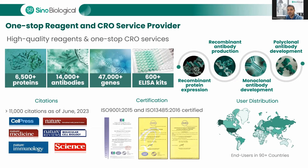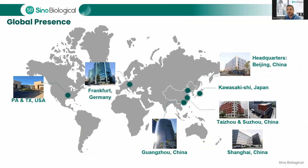We're proud to see our products cited in over 11,000 publications as of June 2023, appearing in prestigious high-impact journals. At Sino-Biological, we have established a strong global presence with headquarters in Beijing, China, and branches within China as well as internationally in Tokyo, Frankfurt, Pennsylvania, and Texas. These locations enable us to provide efficient and reliable support to customers worldwide, ensuring prompt delivery of high-quality bioreagents and comprehensive CRO services. With our global network, we are dedicated to facilitating scientific advancements and collaborations across borders.